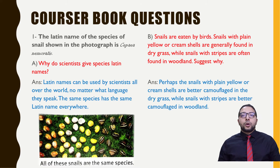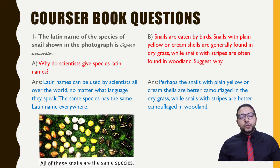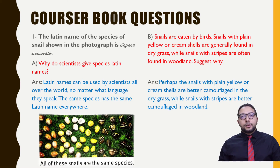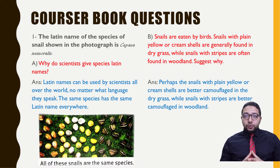Now we're going to look at the coursebook questions and answer those found in the lesson on variation. The first question: the Latin name of the species of snails shown in the picture is Cepia nemoralis. The question asks: why do scientists give species a Latin name?